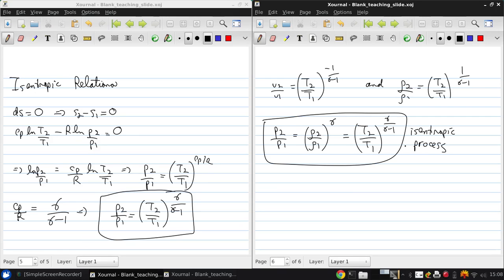So take a step back. Where did this come from? This came from the first and second laws. So this is really an energy relationship for isentropic processes.